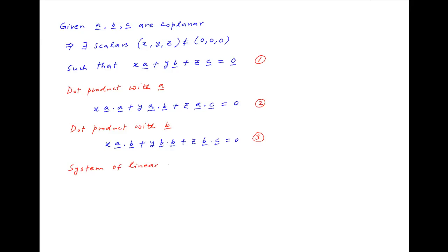Now equations 1, 2, and 3 represent a system of linear homogeneous equations and they will have a non-trivial solution, meaning x, y, and z are not all equal to 0, if the determinant formed by the coefficients of x, y, and z in equations 1, 2, and 3 is equal to 0.